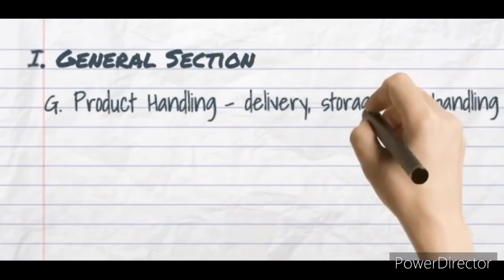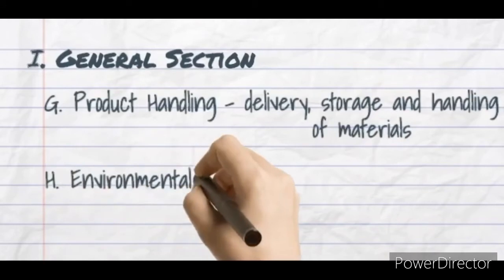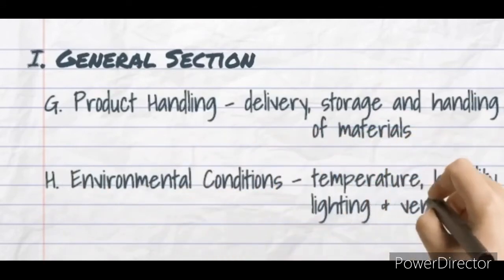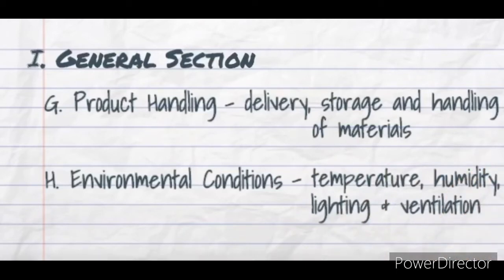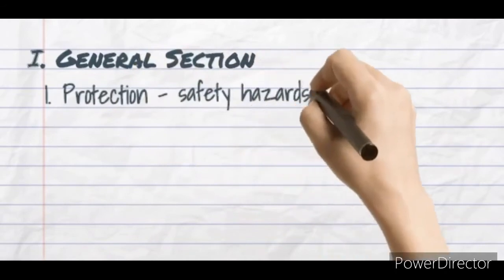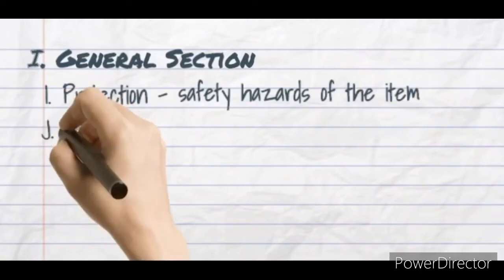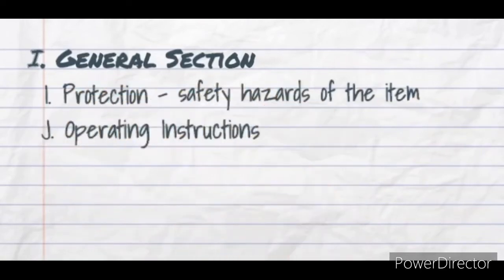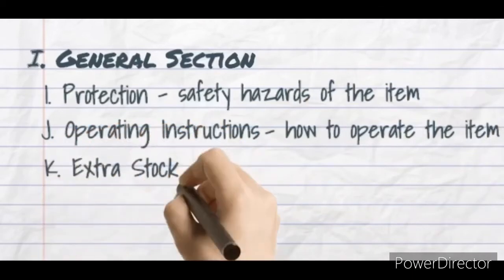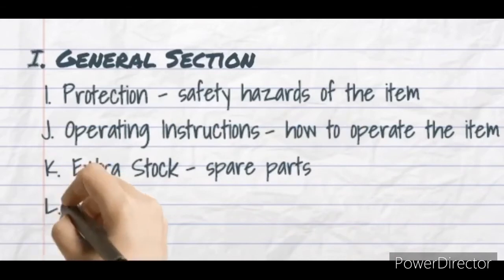Seventh is product handling — everything related to product handling such as delivery, storage, and handling of materials is stated here. Eighth is environmental conditions — this is where statements related to temperature, humidity, lighting, and ventilation are mentioned. Ninth is protection — this is where you give detail to the safety hazards of the item you're specifying. Tenth is operating instructions — this is where you state how to operate items such as elevator systems.